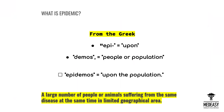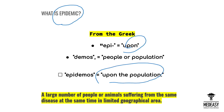If you are new to our channel, please subscribe and like the video. What is an epidemic? Epidemic comes from the Greek: 'epi' means 'upon' and 'demos' means 'people or population.' The combined meaning of epidemic is 'upon the population.' A large number of people or animals suffering from the same disease